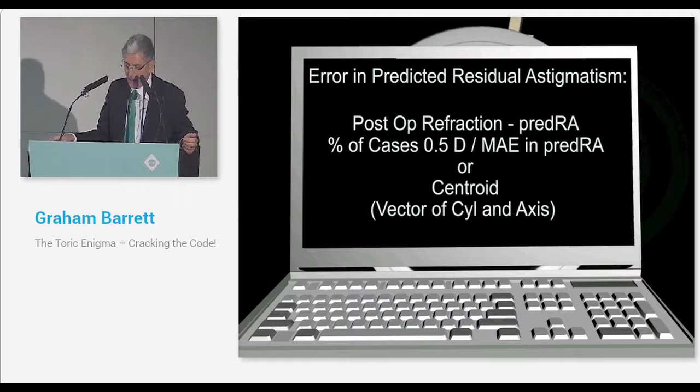You can express that error in one of two ways. You can express it as a percentage of cases within a half-diopter of predicted error, or a better terminology, which if you're not familiar with, you will become familiar with, is a centroid value. The centroid value of a group of vectors reflects both the cylinder power and the axis, and that's the correct term when discussing toric outcomes.